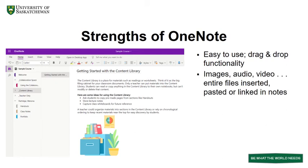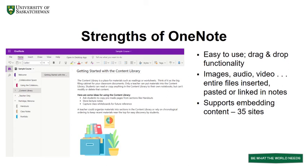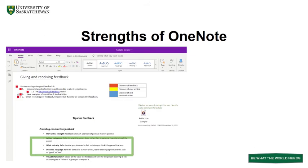OneNote is easy to use with drag-and-drop functionality to place things in notebooks. Images, audio, video, forms, drawings, math equations, screen clippings, and entire files can be inserted, pasted, or linked to content right in your notes. OneNote supports embedding content from over 35 sites and services, such as H5P, TED Talks, Sway, and Vimeo.